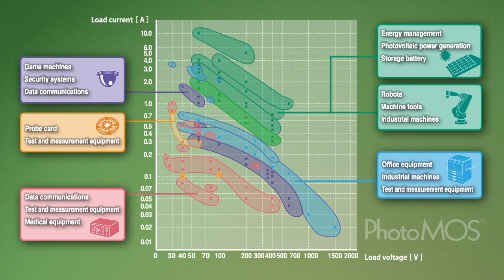Moreover, to meet various application needs, a wide variation of products has been developed. At present, more than 160 different PhotoMOS are available.